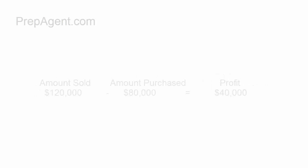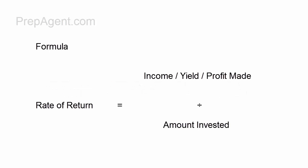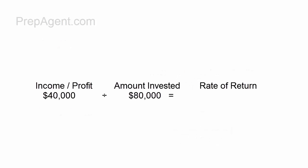We can now determine the profit made. Subtract $80,000 from $120,000 and you get $40,000 of profit. Looking at the formula, you have $40,000 as the profit made, divided by the amount invested of $80,000.